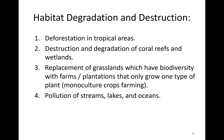Another major habitat threat is the replacement of grasslands, which have biodiversity, with farms and plantations where only one plant is grown — what we call monoculture. You have a vast grassland with lots of different animals and plants, and then you replace that with a farm growing only one plant, greatly reducing biodiversity. You lose animals that depended on the diverse plants, which is a big cause of biodiversity loss.